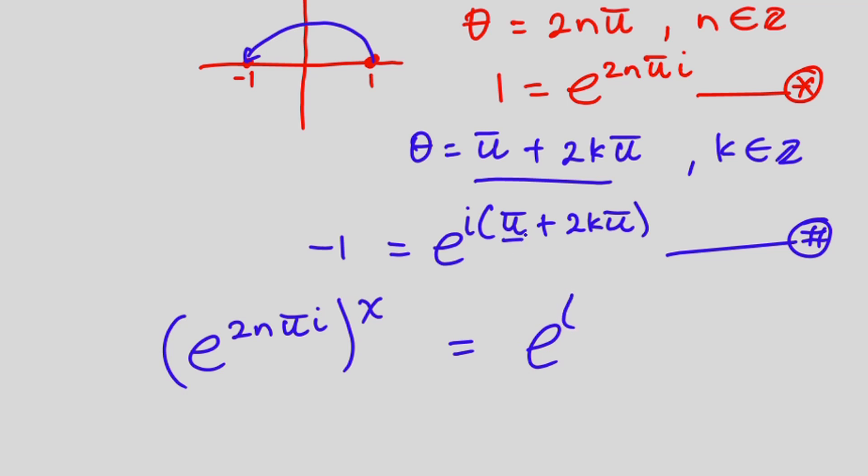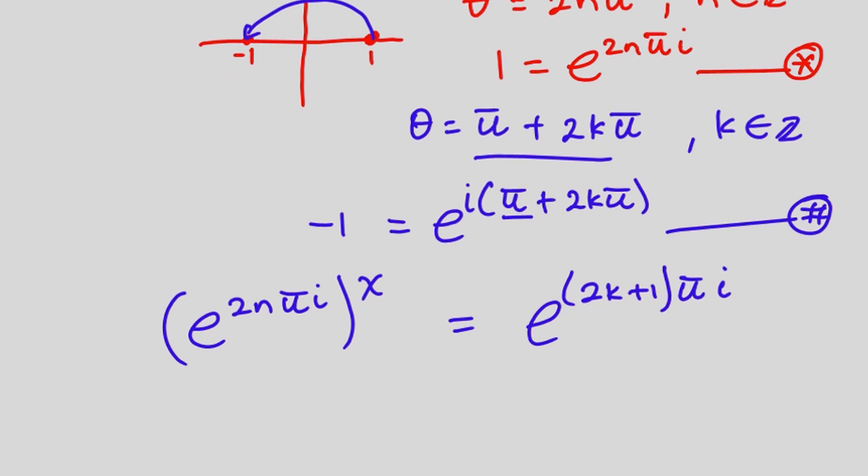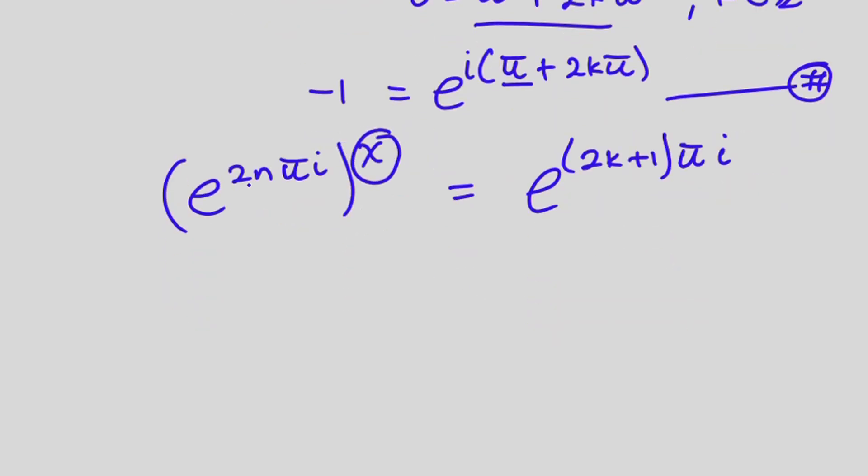Now here we see that we have pi pi so we can factor it out. In the parentheses we will have 2k plus 1 then pi times i. From indices we can multiply this by x straight away so we're going to have e to the power 2nx pi i is equal to e to the power 2k plus 1 times pi i.